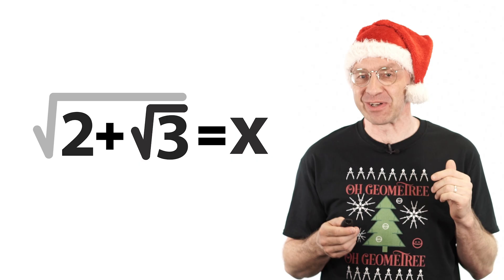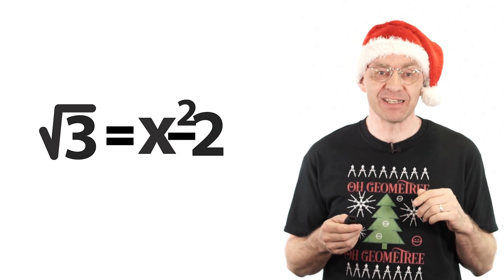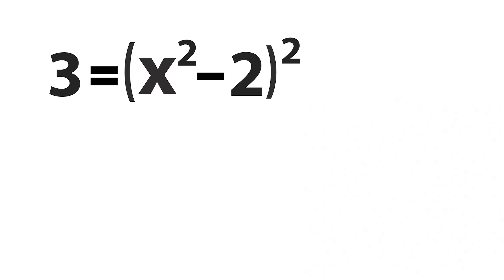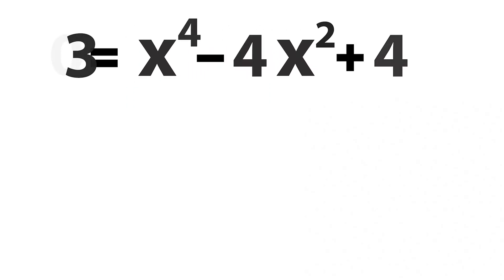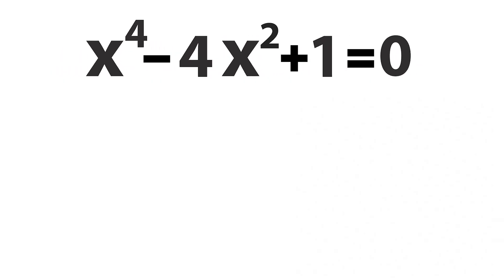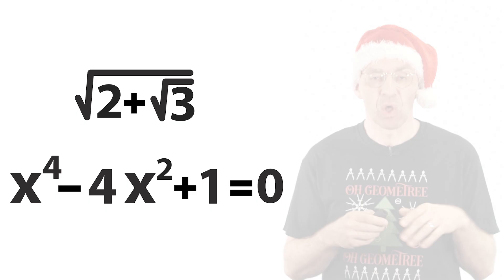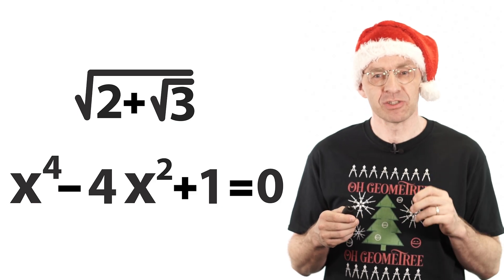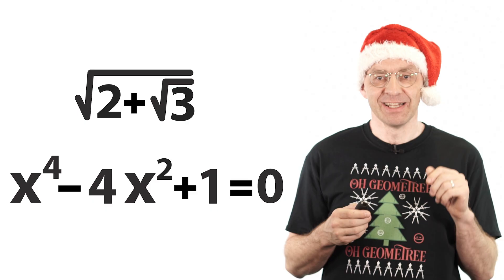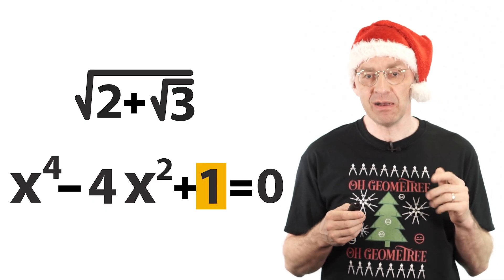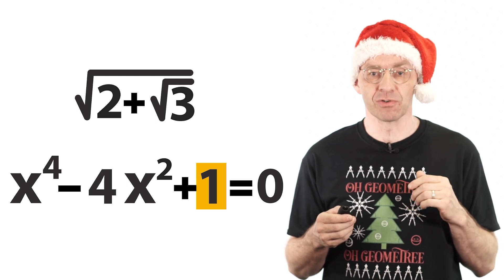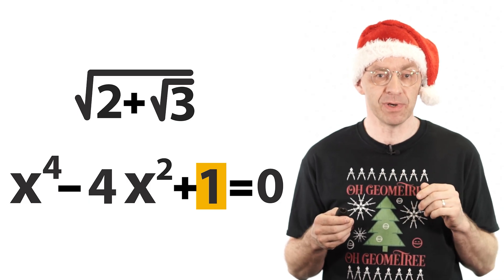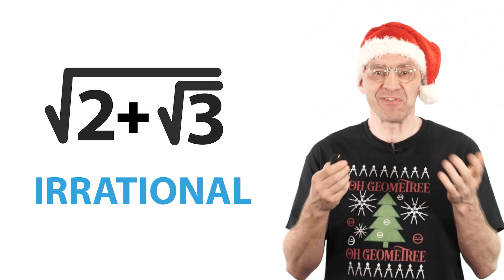Squaring on both sides gets rid of the outer square root. Shuffling 2 to the right side gives this and squaring again gets rid of the second root sign. Now some quick algebra autopilot. What we've shown is that our root combo number is a solution of this polynomial equation. And now the integral root theorem is ready to pounce again. The only factors of the constant term are 1 and minus 1, both of which are definitely not solutions of the equation. And so all real solutions of this equation, including our rooty combo number, must be irrational. How nifty is that?